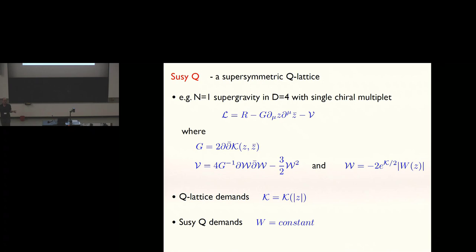So what's a SUSY-Q? A SUSY-Q is a supersymmetric Q-lattice. It's just a Q-lattice construction that preserves supersymmetry. The example that we'll look at, this is not meant to be a comprehensive as yet analysis, but within the context of four-dimensional supergravity coupled to a single scalar field, this is the full story.